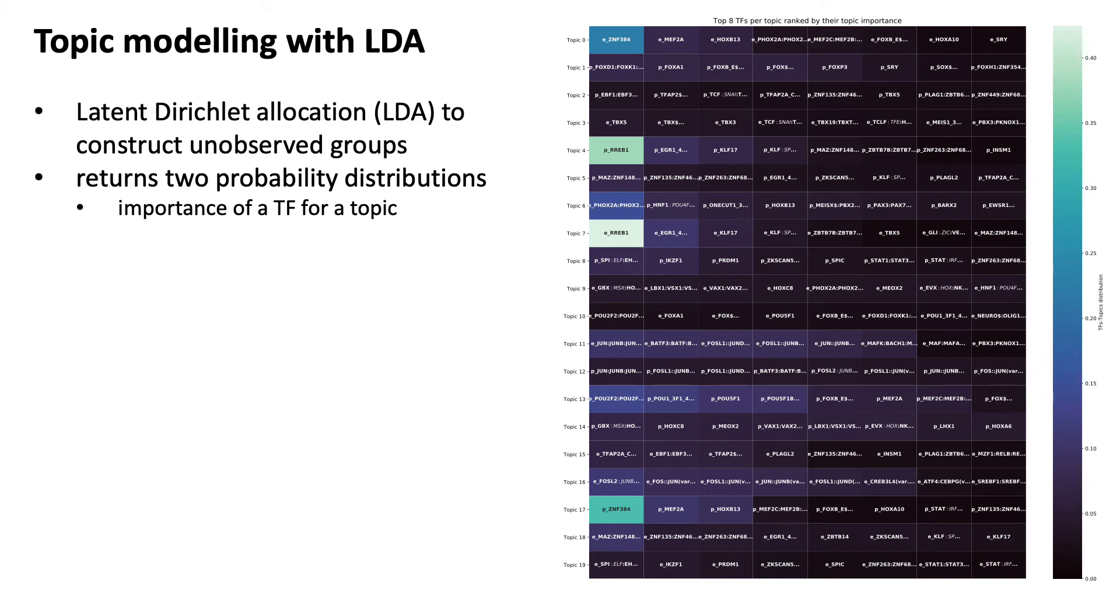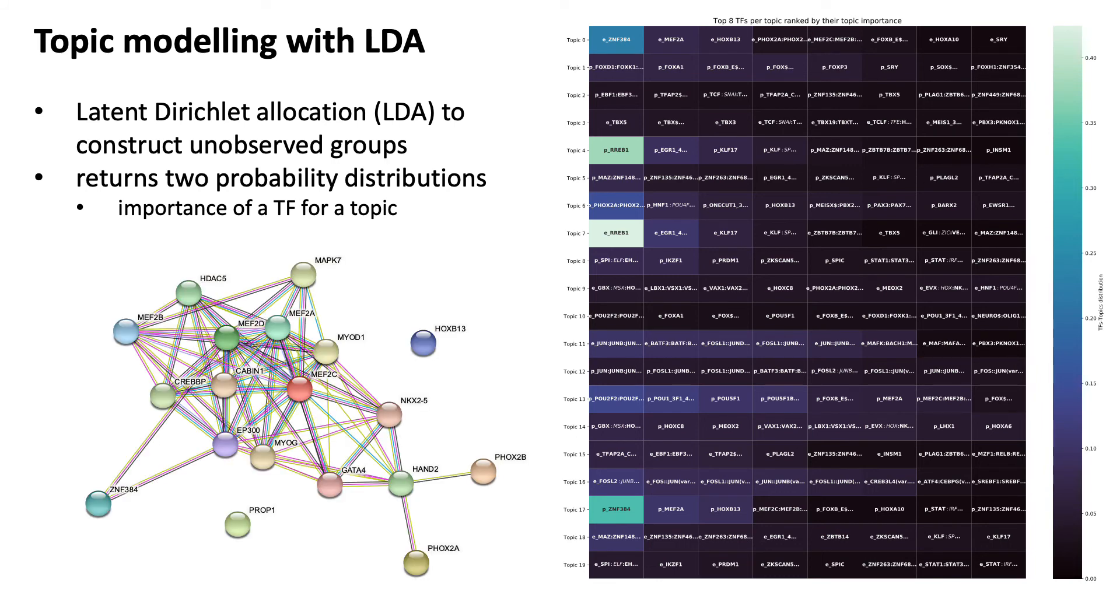And if the transcription factor has a small 'e' in front, it means that it was counted in the enhancer side of the interaction, and the 'p' stands for the promoter. And one way to look at this data or to get more insight into it would be to take the relevant transcription factors in a topic, put them into a string database, and see what interactions we find if this makes sense.